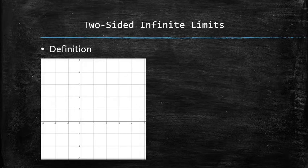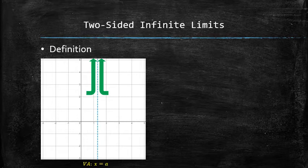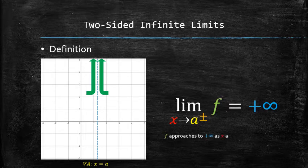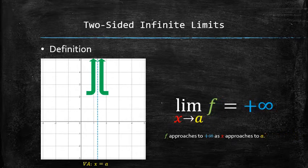We associate the following behavior near vertical asymptote x equals a with the following limit statement called a two-sided infinite limit. We say f approaches to positive infinity as x approaches to a from both sides. Frequently, we omit the plus-minus notation and simply say f approaches to positive infinity as x approaches to a.